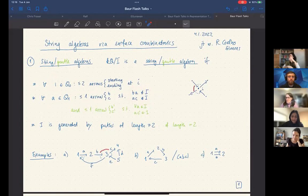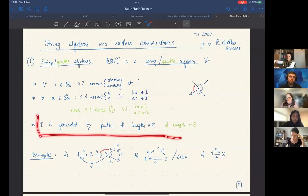And if we assume in addition the green part, that we also have at most one arrow which composes into a relation in both directions. Then that's called a gentle algebra.